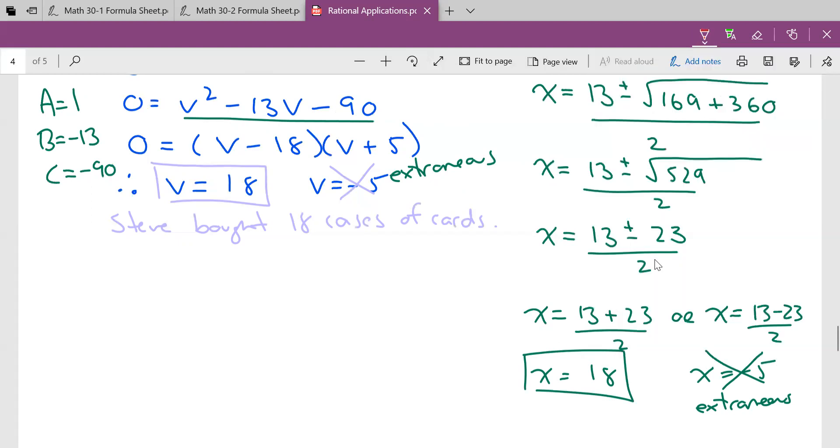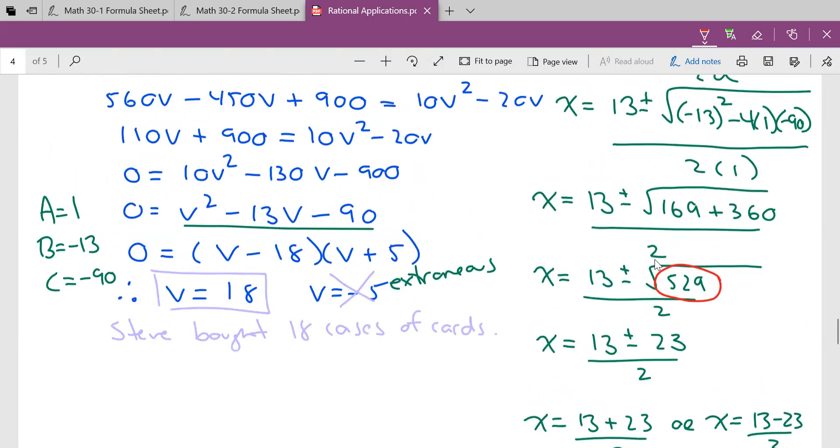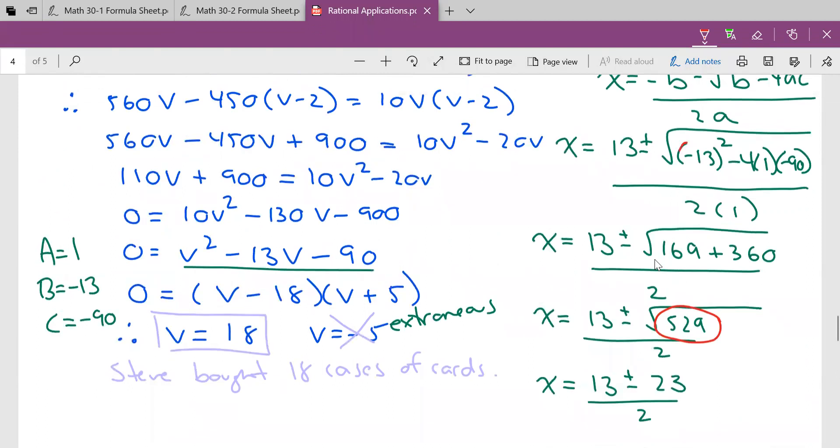Now, a couple tips. If for some reason you end up with a negative underneath your square root, you done did screw up. Okay? And again, where does that screw up usually occur? Right here. If I hadn't put those parentheses there, this would have told me probably the wrong answer. So there's the number one mistake I'll see here. Hey, friends, there is word problems or applications in rationals. Hope that helped. See you next time.